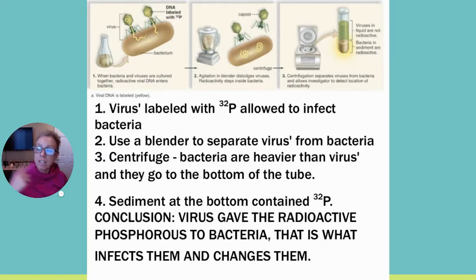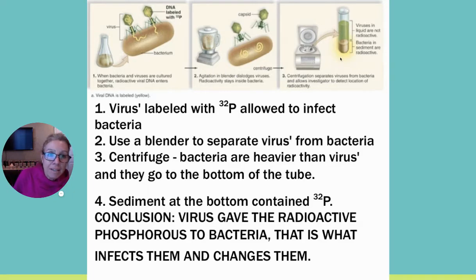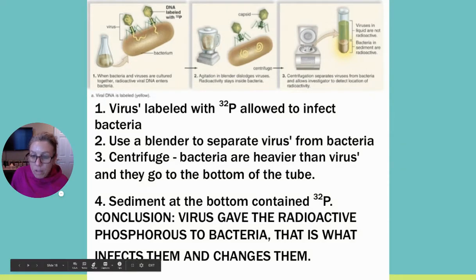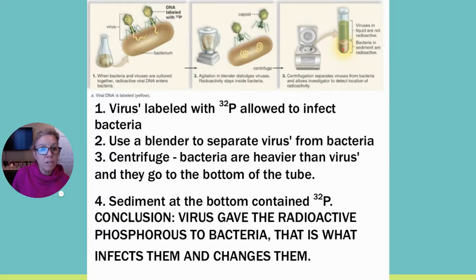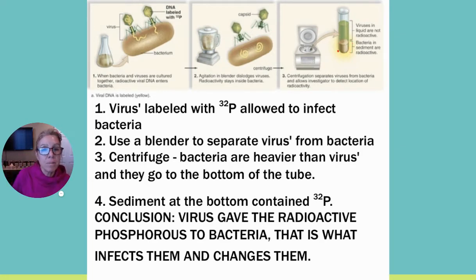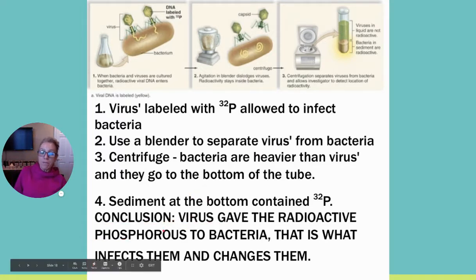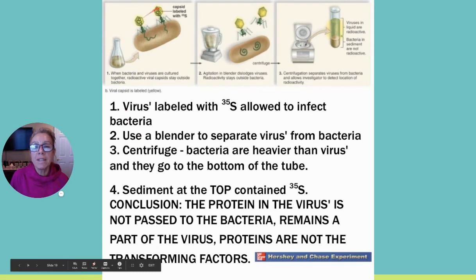When they analyzed the results, down in the sediment where the bacteria were, they found the radioactive phosphorus. They knew that phosphorus originated in the virus — they had labeled it with P-32 — and now it was in the bacteria. The phosphorus was tracking the DNA. Conclusion: the virus gave its radioactive phosphorus, i.e., its DNA, to the bacteria, and that is what infects and changes them.